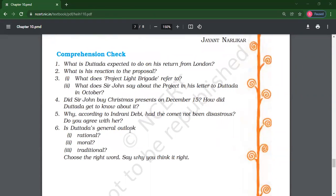Last question, is Dattada's general outlook rational, moral, traditional? Choose one and then you have to give reason why. Okay, Anmol is giving answer number fifth. Correct, Akshima, correct answer? Rational, correct. It was rational, not traditional, rational. His outlook was rational.